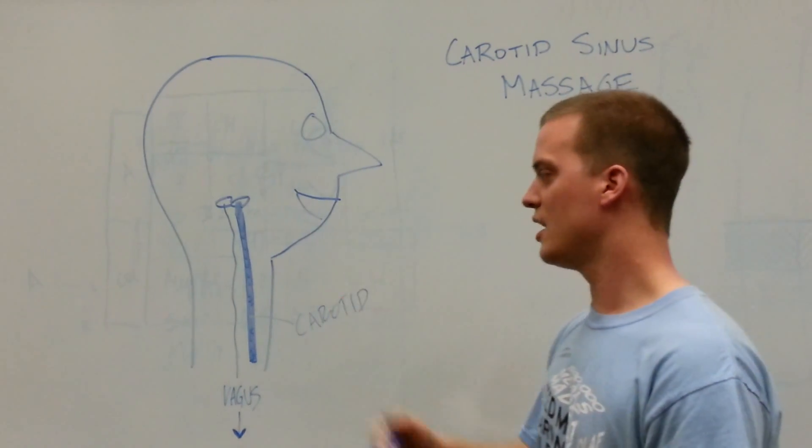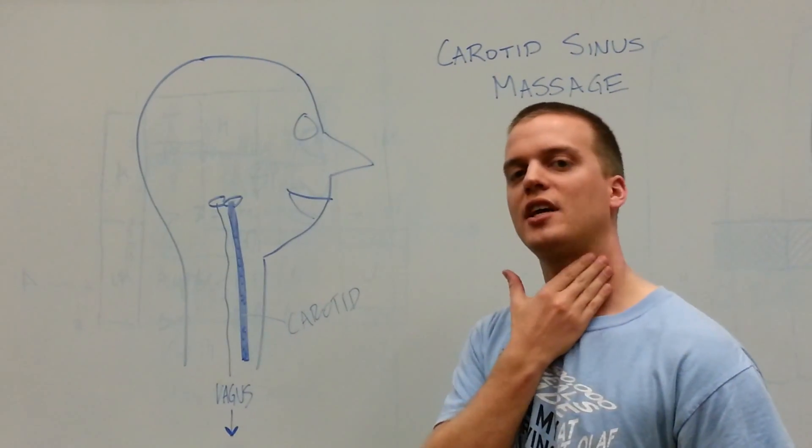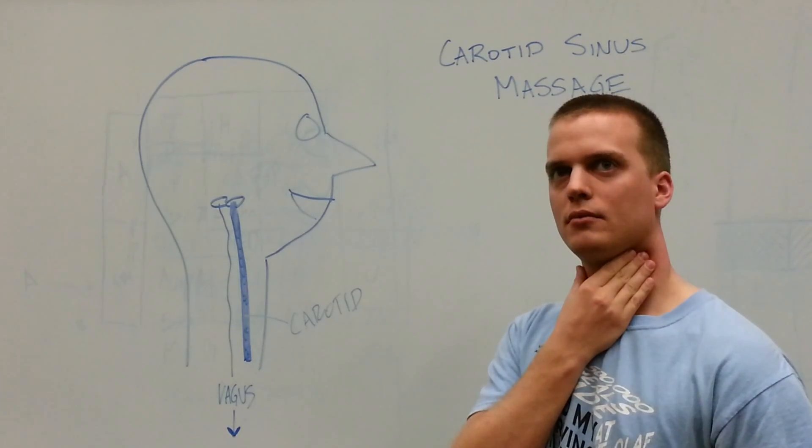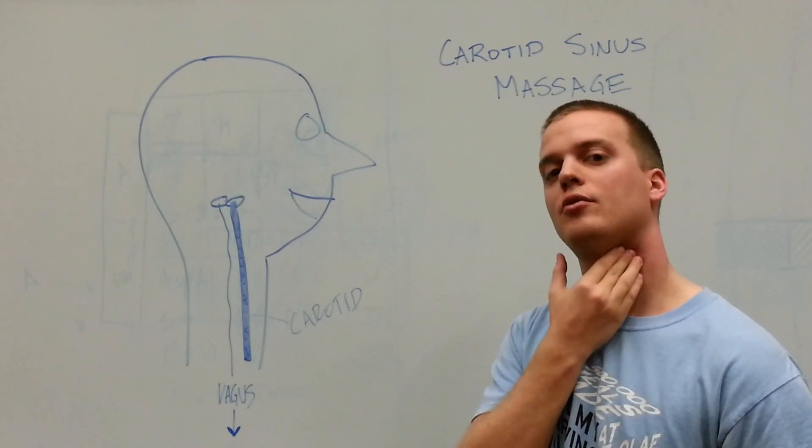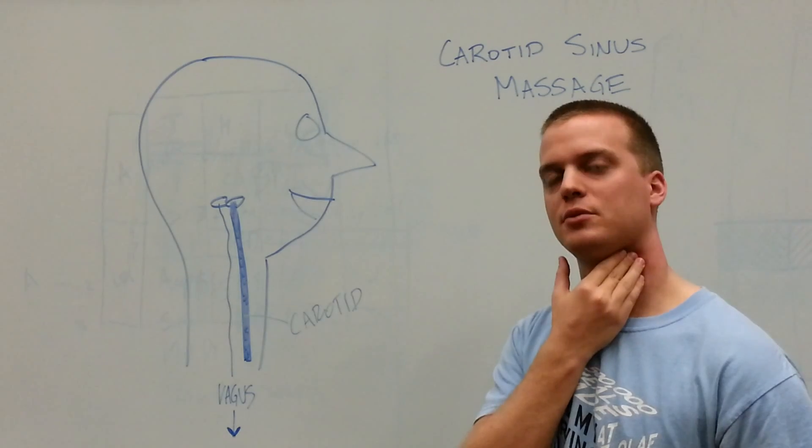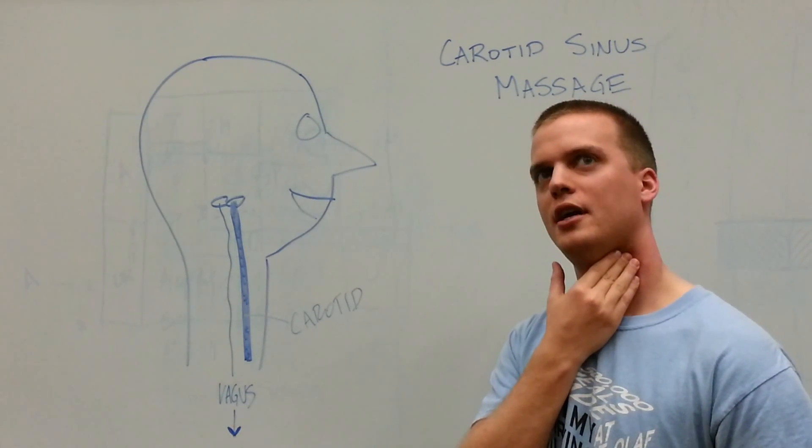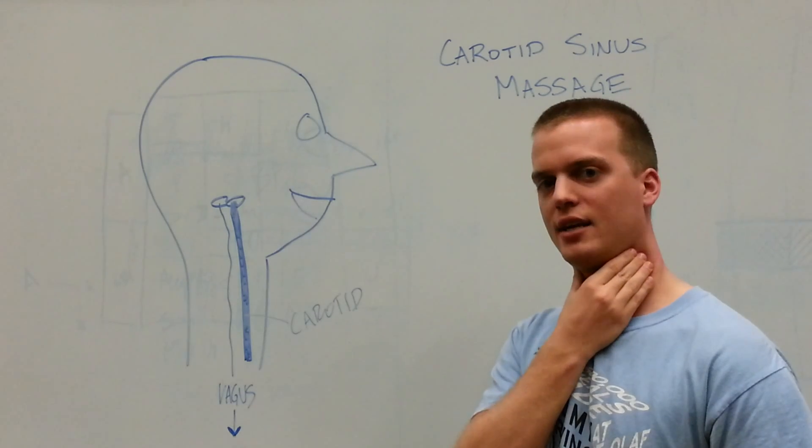So what you're going to want to do is take your hand and feel on the side of your neck until you feel your carotid pulse, and you're really going to try and localize that as best as possible. So take your time, make sure you're on the right part here.